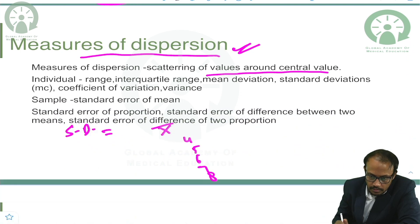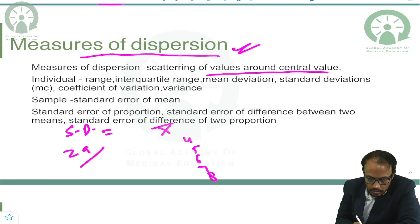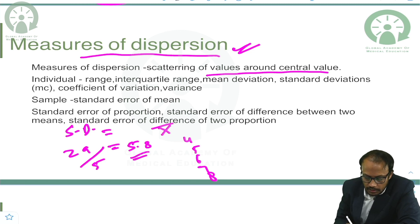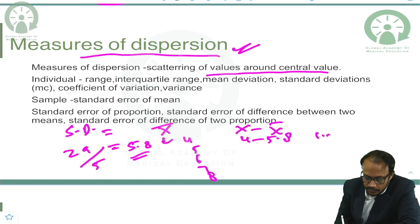Adding four plus five plus six plus seven plus eight gives twenty-nine, divided by five, which is approximately 5.8. So the mean is 5.8. Then we subtract each value from the mean: four minus 5.8 gives negative 1.8.